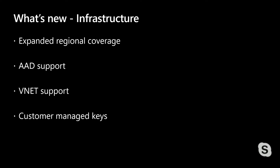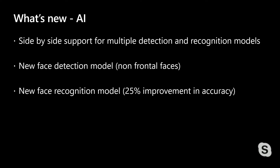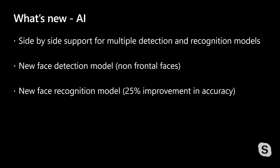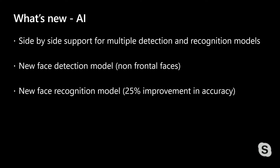So what's new on the AI side? On the AI side, the first thing we've added is side-by-side support for detection and recognition models. This ensures we do not introduce backward compatibility issues as we roll out new models. When a new face detection or recognition model is available, it ships as an additional model alongside existing ones. Developers can pick if and when they want to use that new capability, allowing them to test it with their data and set the right thresholds before rolling out changes.